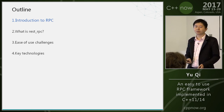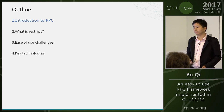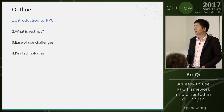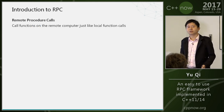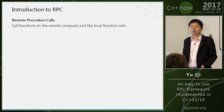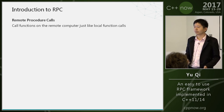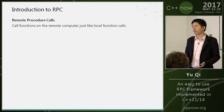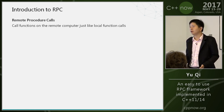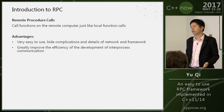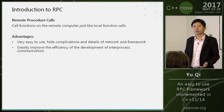I think most people have heard of RPC. RPC means calling functions on a remote computer just like a local function call. Local function means it's very easy to use, and the local function call hides the complexity of the network and the framework. So RPC can help us improve the efficiency of developing a network application.